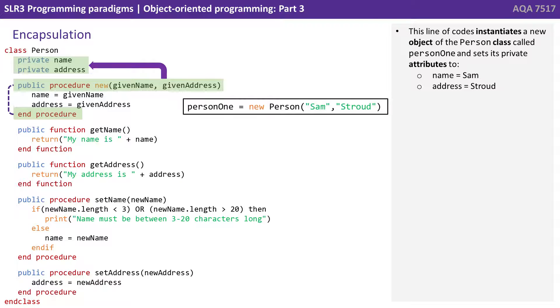Let's have a look at this in the form of some code. This line of code instantiates a new object of the person class called person1, and we set its private attributes to name equals Sam and address equals Stroud.